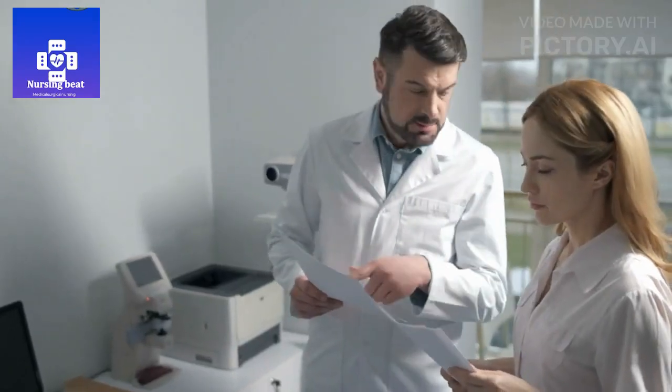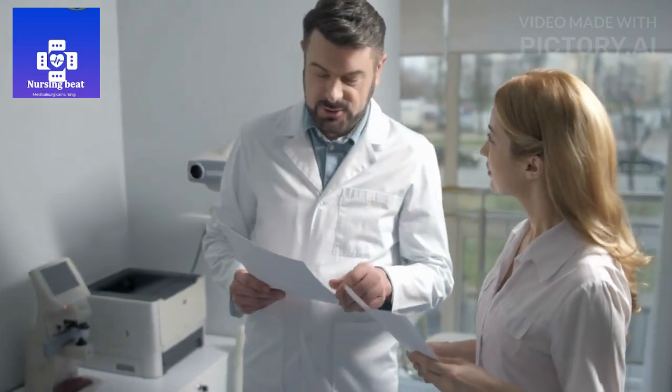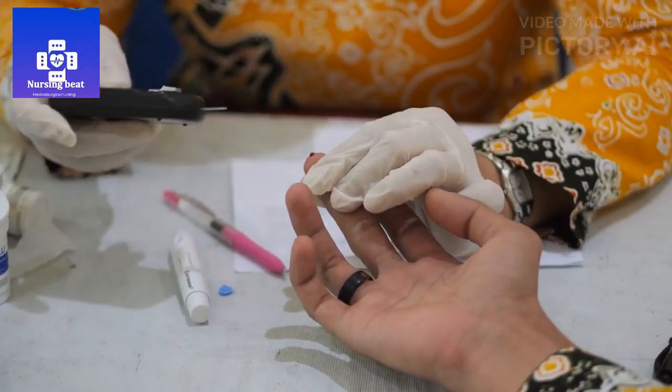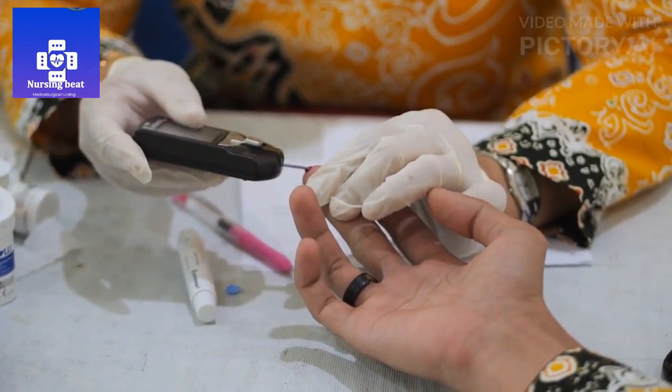Treatment. The choice of treatment depends on the stage of diabetic retinopathy. 1. Control of blood sugar. Tight control of blood sugar levels is crucial to slow down the progression of the disease.